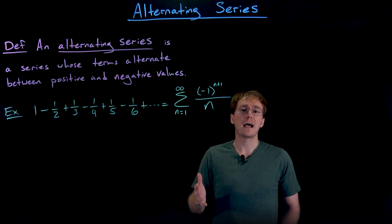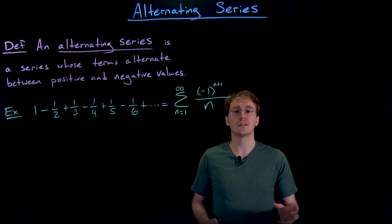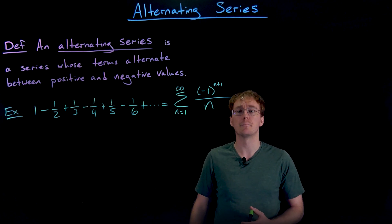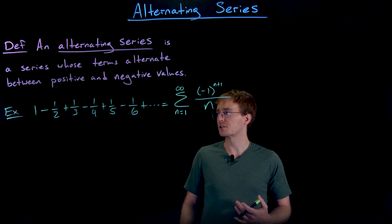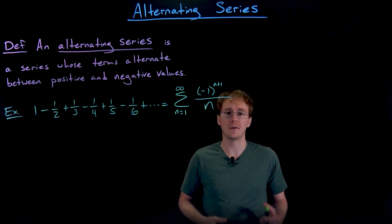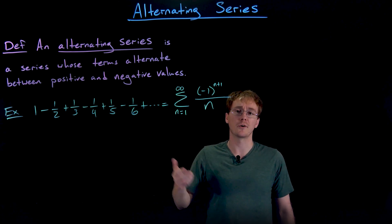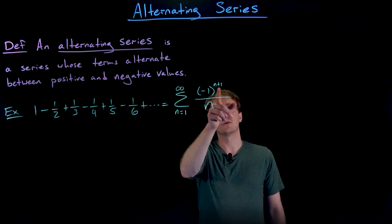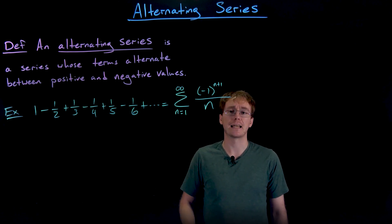That factor of negative one to some power of n is essentially the piece causing the alternation. It may not always look like negative one raised to a power of n — you may see it using a trig function — but the most common way is negative one raised to some power like n or n plus one. Whether it's n, n plus one, or n minus one really depends on whether you want that first term to be positive or negative. For instance, here with n equals one, negative one to the power of one plus one equals negative one squared, which is positive one.